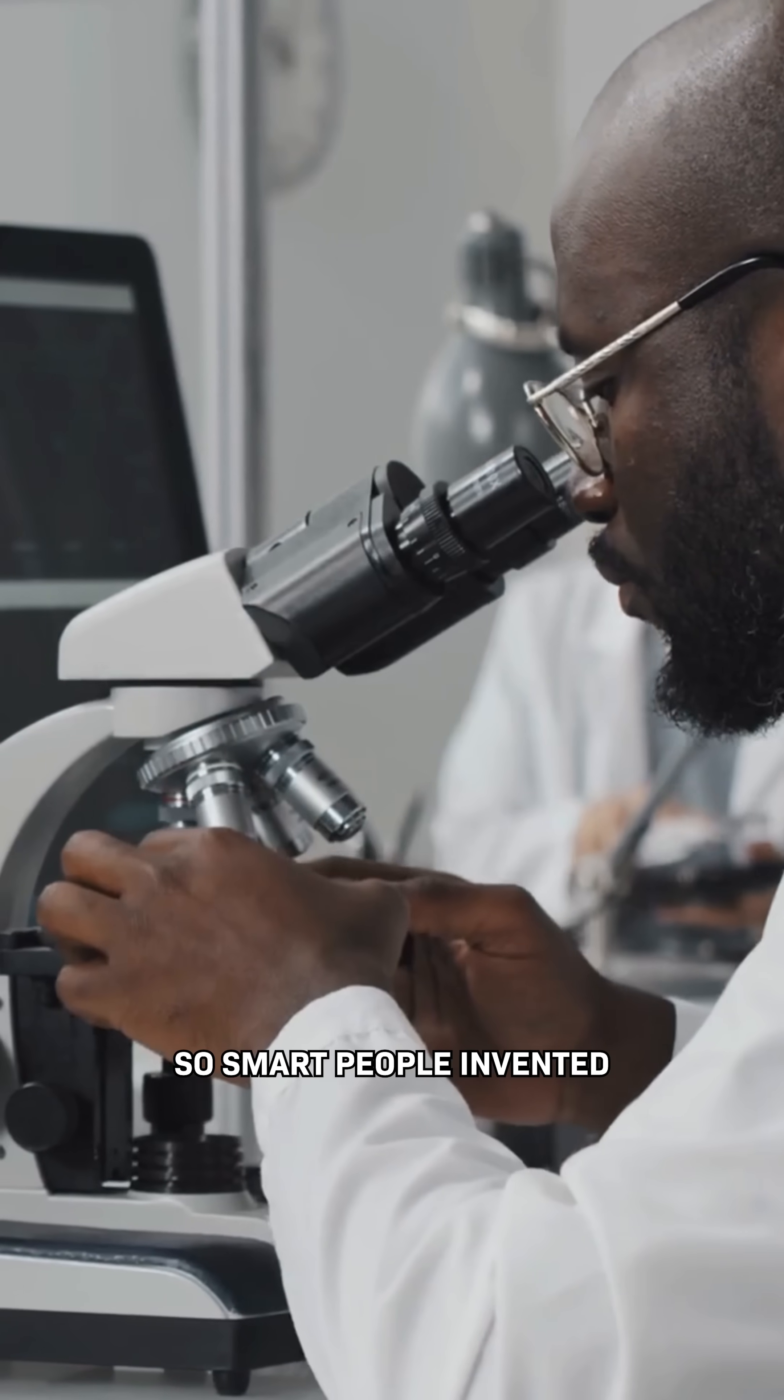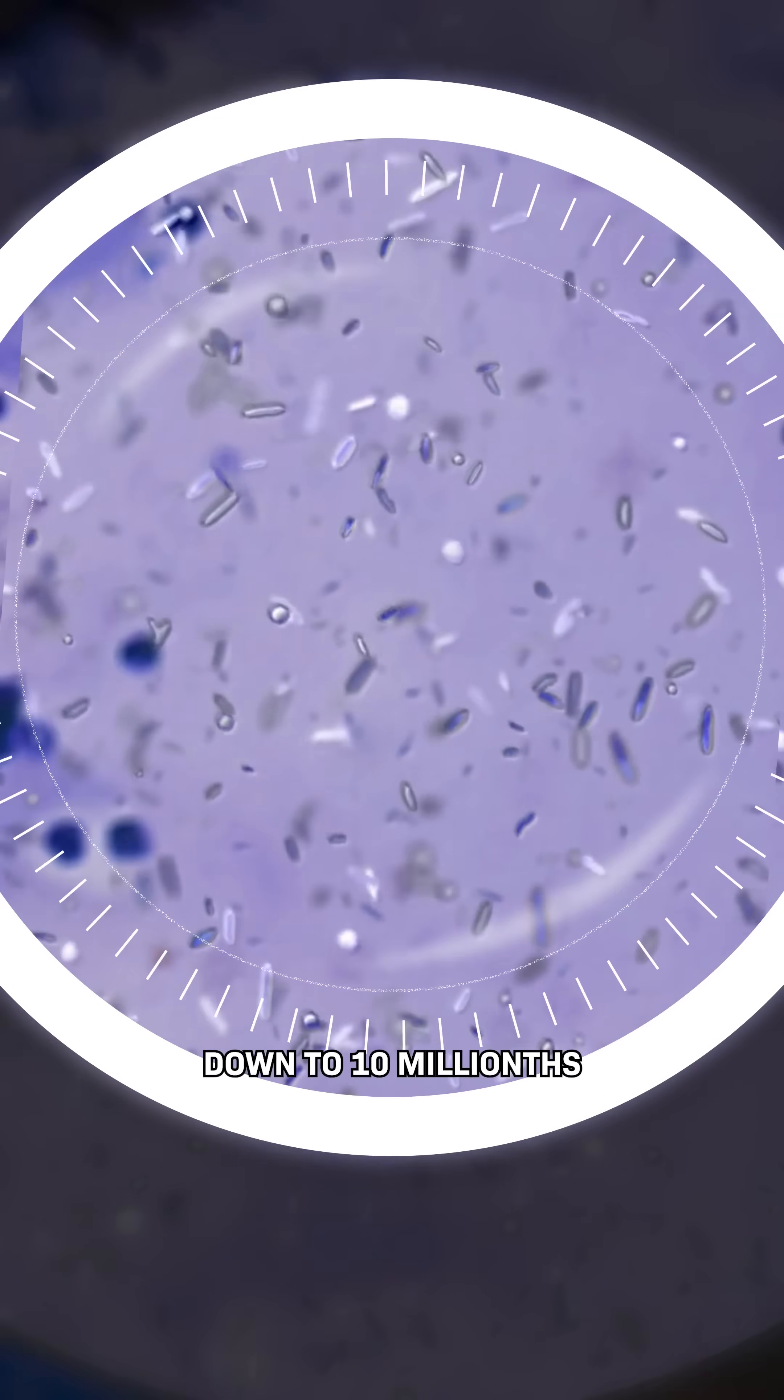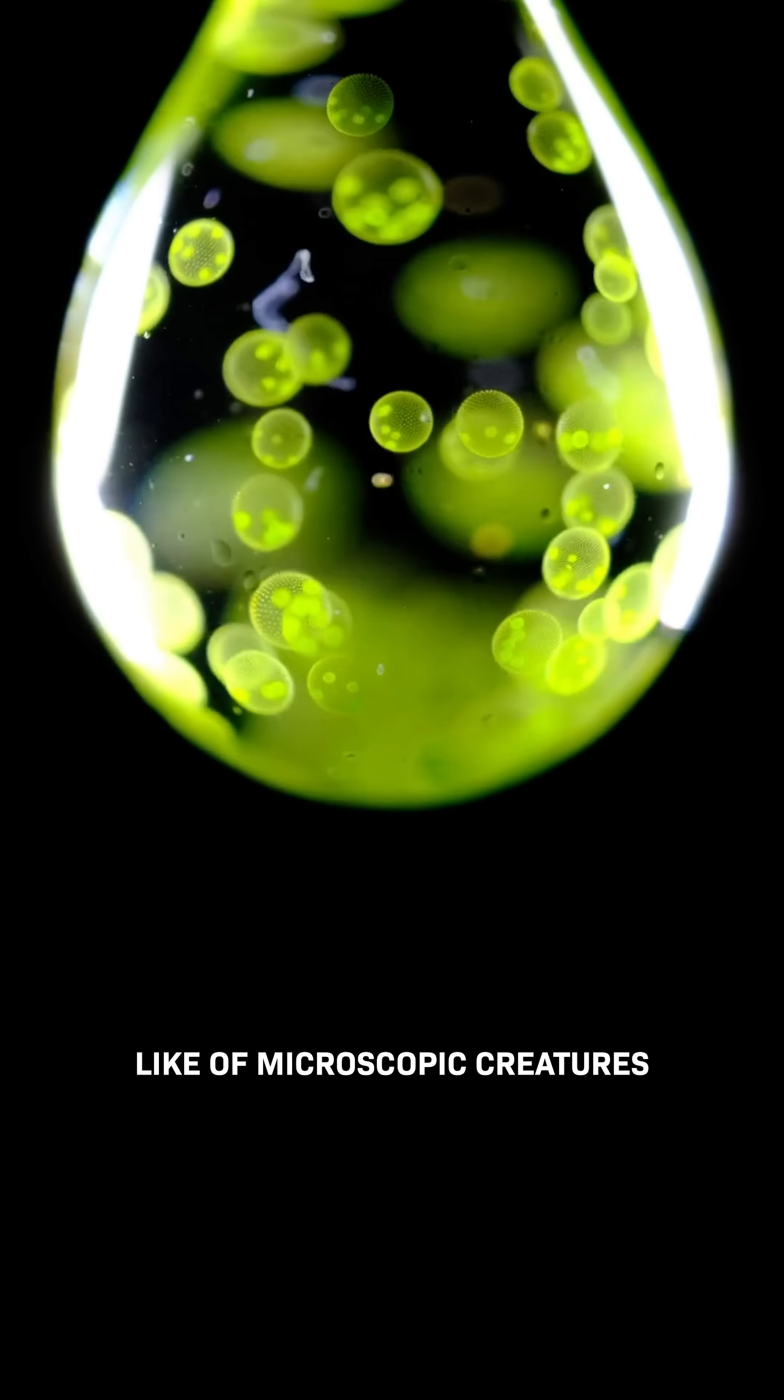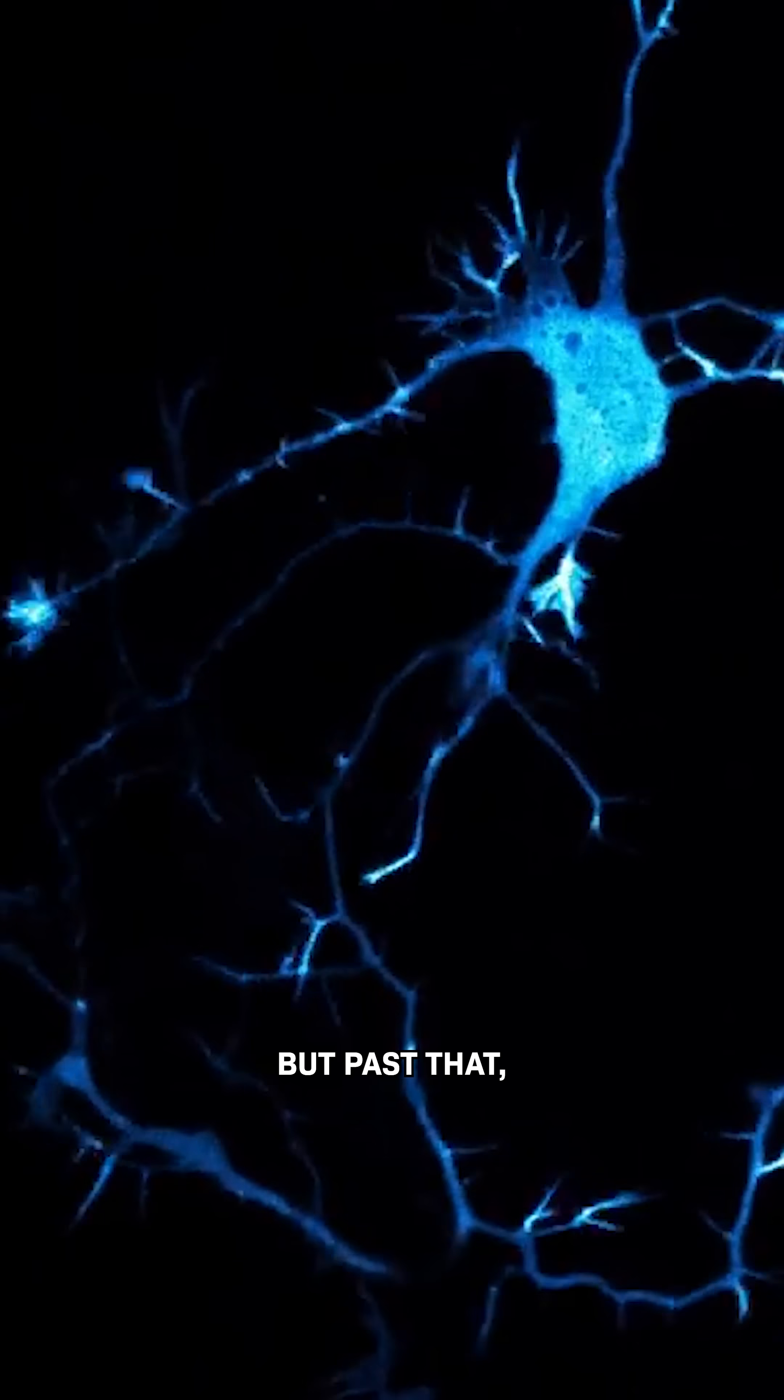Things much smaller than that don't reflect enough light for our eyes to register, so smart people invented optical microscopes which let us see things down to 10 millionths of a meter by shining light and using lenses to magnify the image, like of microscopic creatures or neurons. But past that,